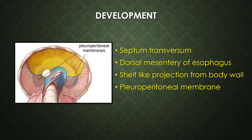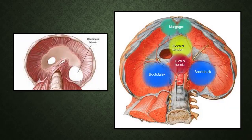If there is failure of development of the pleuro-peritoneal membrane on one side, that results in a congenital diaphragmatic defect - seen as a Bochdalek hernia, because of failure of formation of the pleuro-peritoneal membrane. Other hernias include Morgagni's hernia through the enlarged space of Larrey, defects in the central tendon, and esophageal opening defects which result in hiatus hernia.